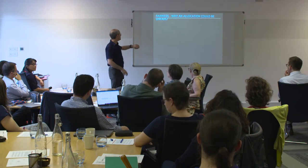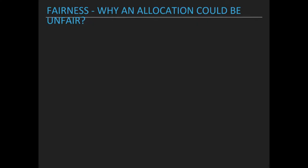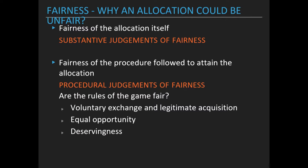The next question is: what qualifications could make an allocation unfair? Here the two concepts are substantive fairness and procedural fairness. Substantive fairness compares only outcomes; procedural fairness is about how we end up reaching those outcomes. Elements for the procedural judgment could be more in the Nozick conception of fairness — with the idea that if we obtain things in a legitimate way with voluntary exchange, that could create fairness — along with the idea of equality of opportunity, or even deservedness.